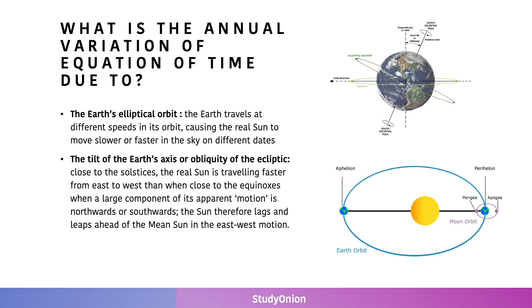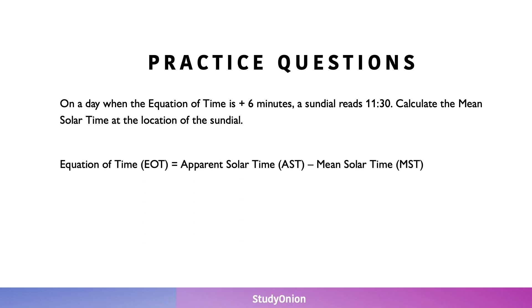Let's take a look at another practice question. On a day when the equation of time is plus 6 minutes, a sundial reads 11:30. Calculate the mean solar time at the location of the sundial. The formula for the equation of time is EOT equals apparent solar time (AST) minus mean solar time (MST). Can you try and calculate the value of this question? Pause the video and come back to it in a couple seconds once you've calculated it.